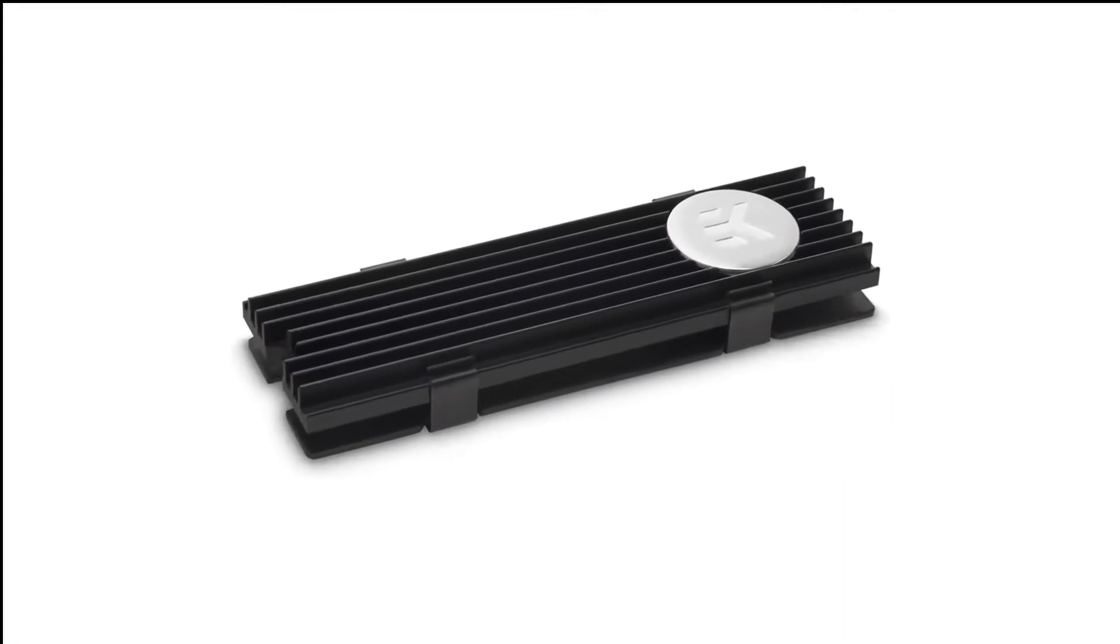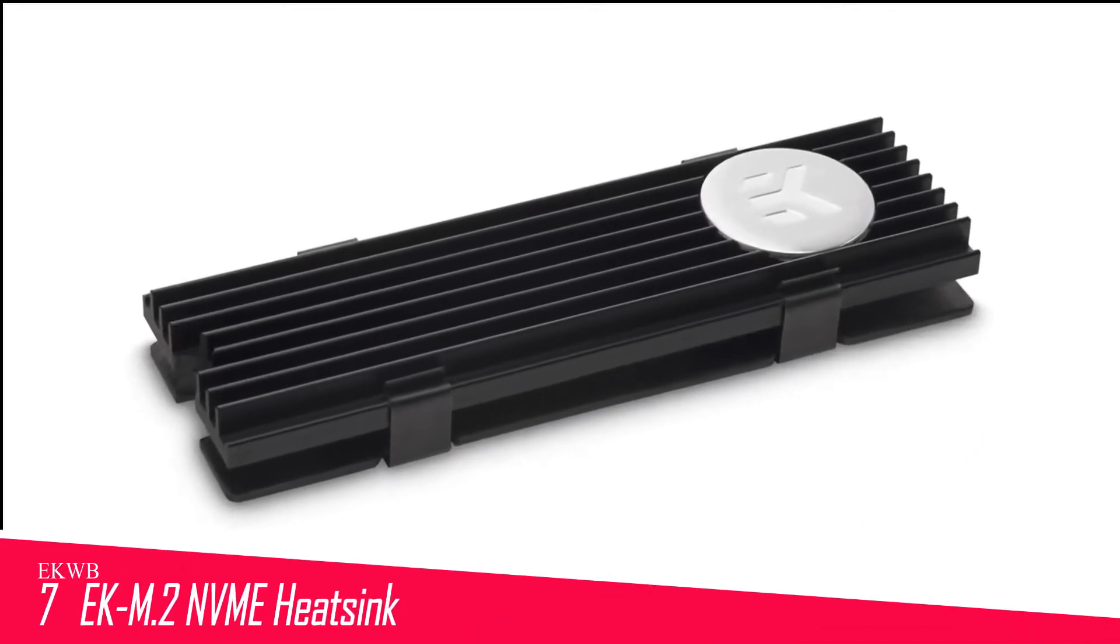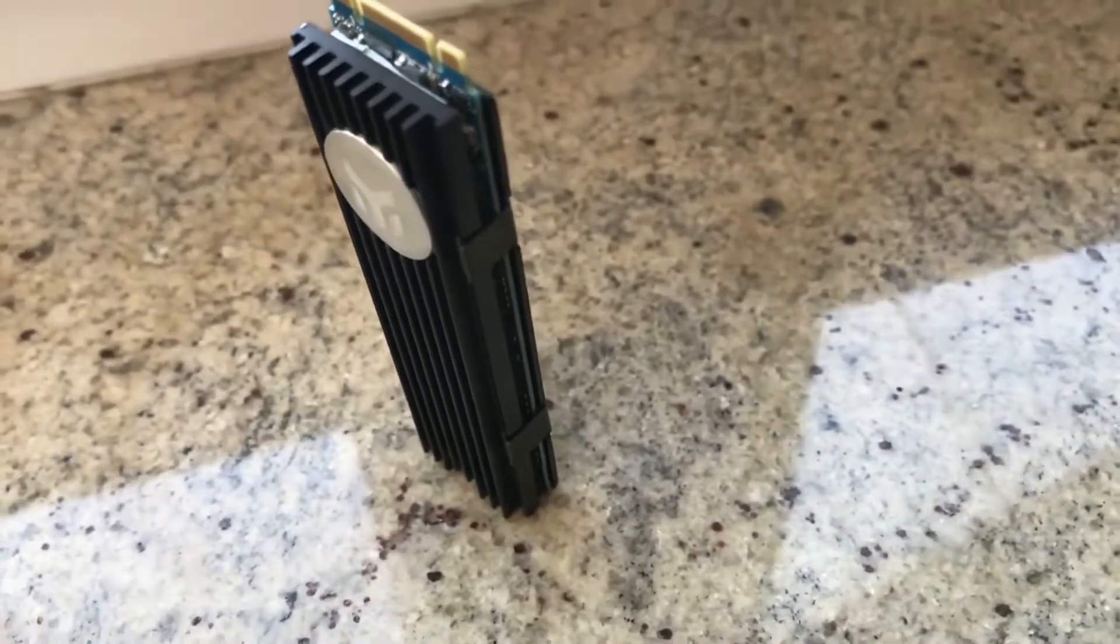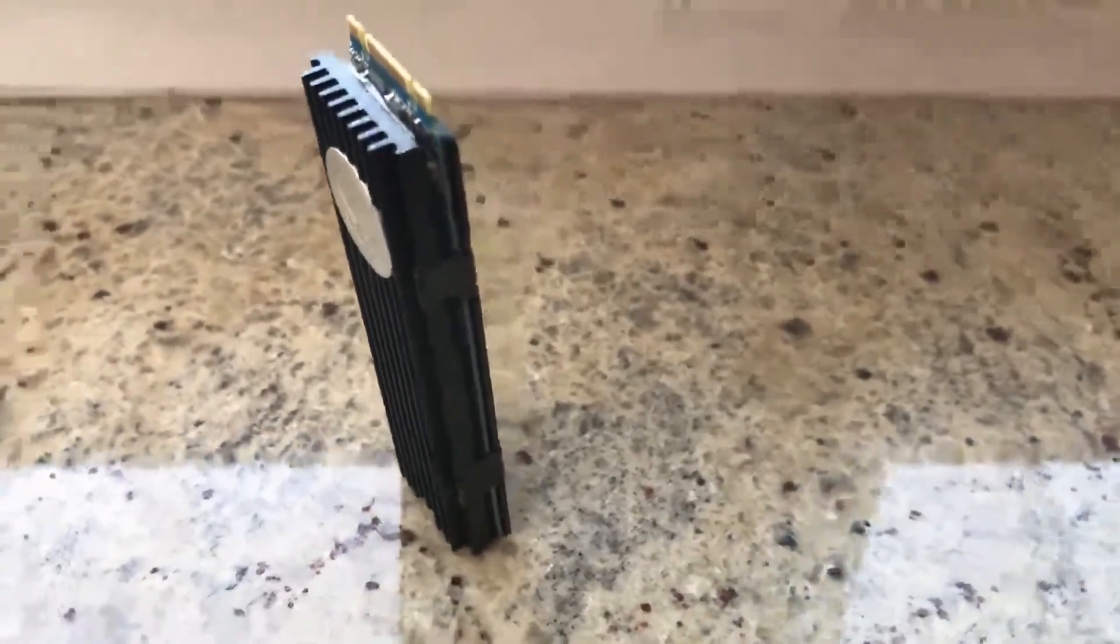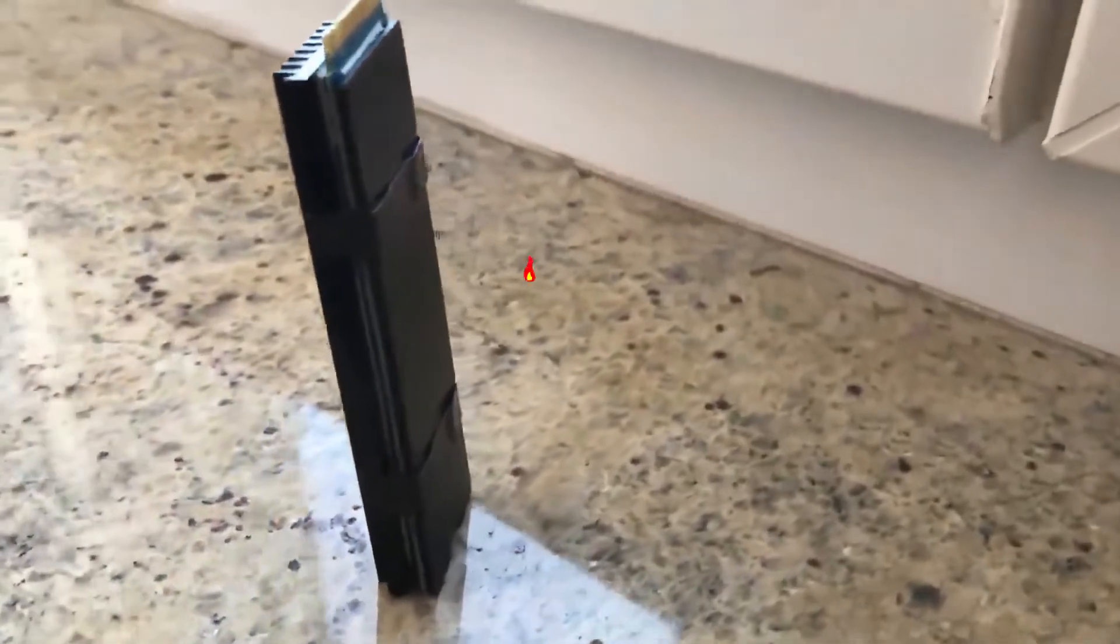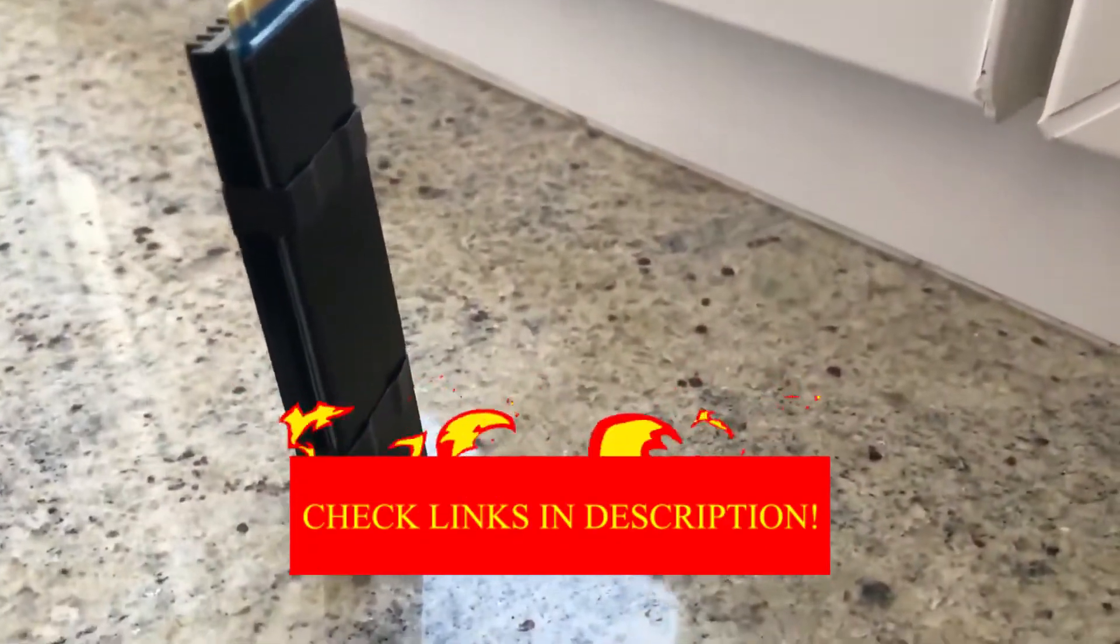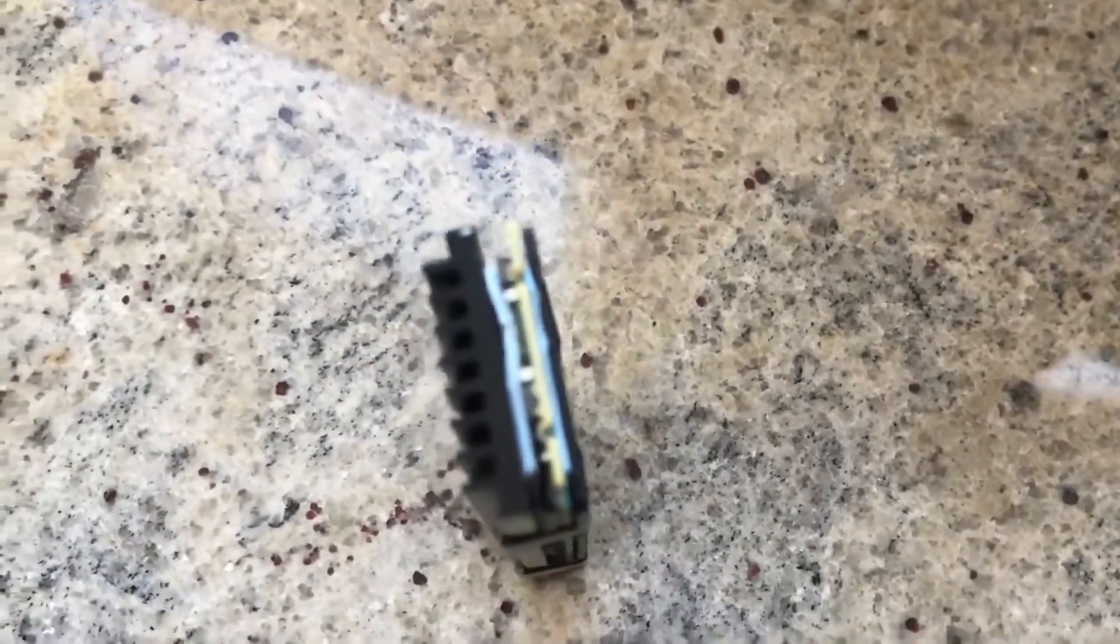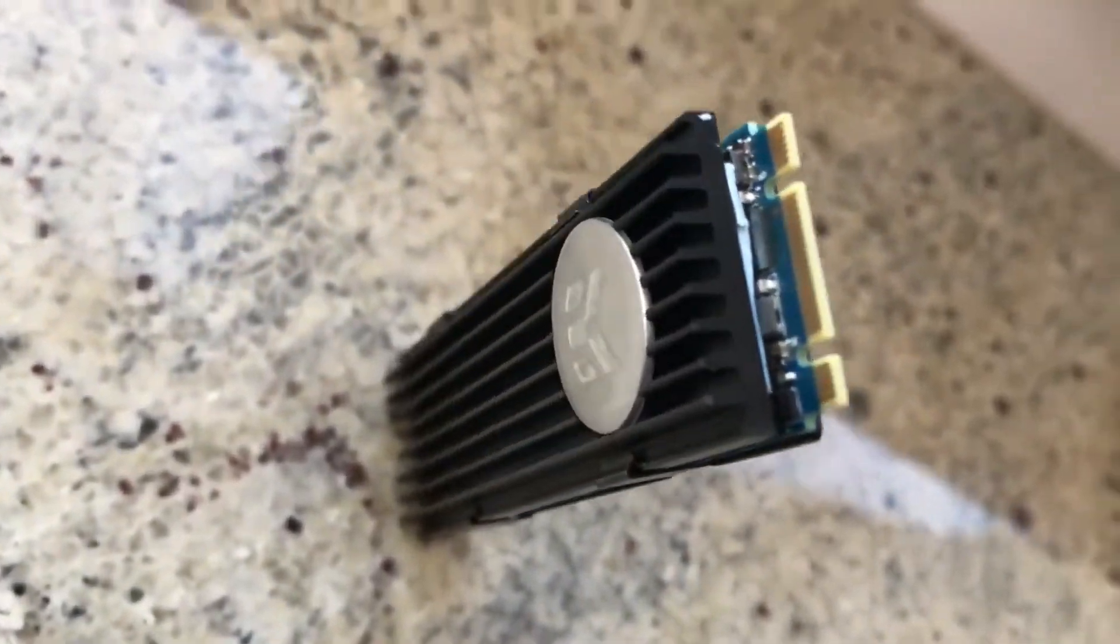Number 7 in my list is EKWB EKEM2 NVME Heatsink. EKWB is a well-established brand in the cooling industry, which is why their EKEM2 Heatsink is one of the best M2 SSD Heatsink options out there. It comes at a reasonable price and with a subtle design that looks right at home in just about any build.